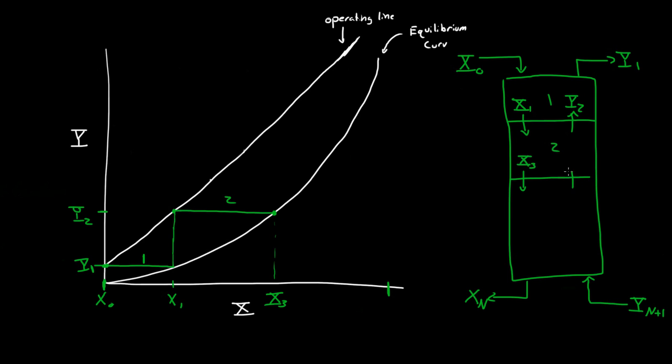And X_3 is mixing with... that's Y_2, not 3. Because X_2 is leaving stage 2, so these two must be in equilibrium with each other. And this is, of course, Y_3, because it's coming from stage 3. So we go up. This is Y_3. So we go all the way across.